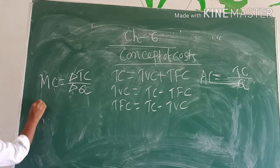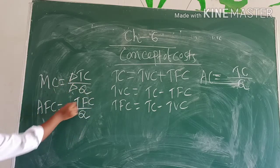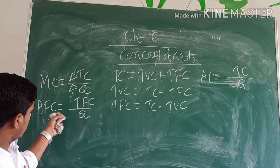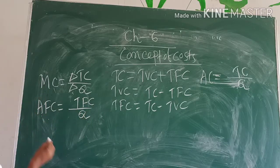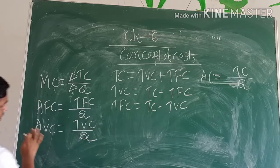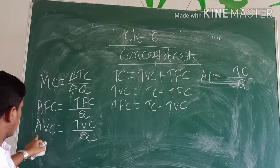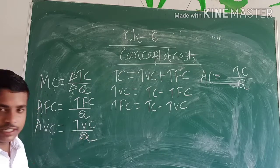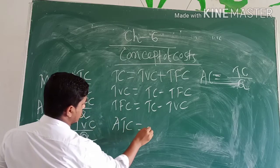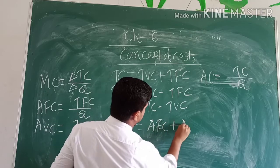Again, AFC equals TFC by Q. And AVC equals TVC by Q. Again, we can write average total cost equals total cost divided by output, and that is AC.